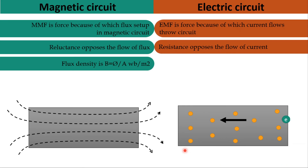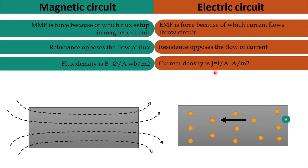Flux density B is equal to flux φ divided by cross-sectional area A, and is measured in Weber per meter square. Flux passing through a unit cross-sectional area is known as flux density. Similarly, in an electrical circuit, current density J is equal to current I divided by cross-sectional area A, measured in ampere per meter square. Current density is the current flowing through a unit cross-sectional area.